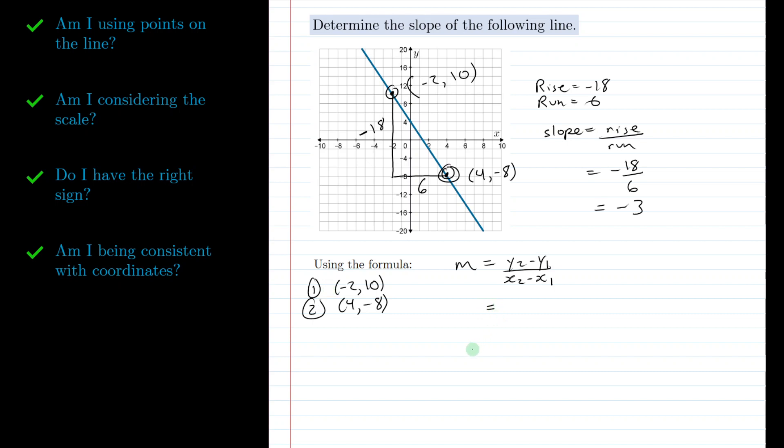So now when we go over to our formula y₂ - y₁, we should be doing -8 because that's the y value for point 2 minus 10 which is the y value for point 1. And when we divide we're going to do x₂ - x₁ in the denominator. It's important that we do 4 minus (-2) not the other way around. We have to be consistent.